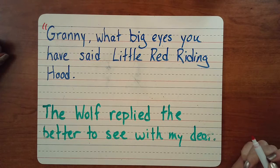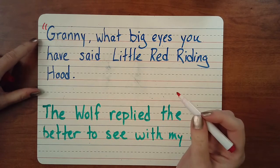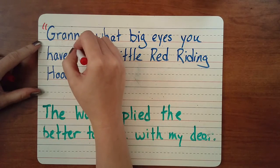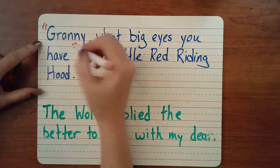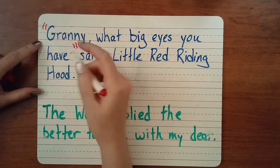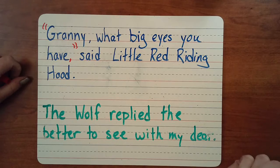We can't put them around the whole thing. We have to just put them around the words that she said. And she said, 'Granny, what big eyes you have,' and then she stopped talking. Now they're hugging the other way. You can separate them from the dialogue tag with a comma.